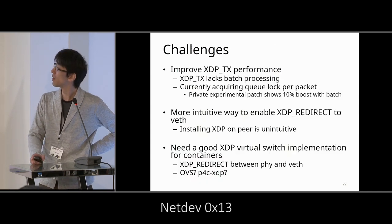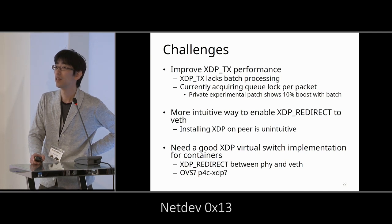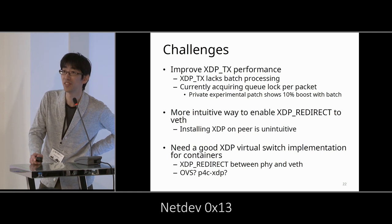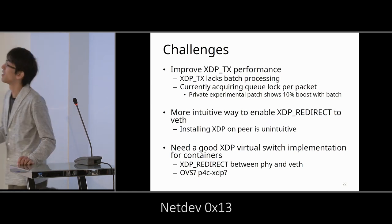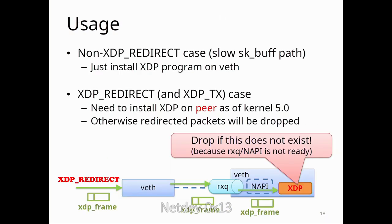Another question: regarding the queue lock per packet issue — does the driver not allocate a second set of transmit queues to allow lockless transmit? The speaker clarified that the dedicated RxQs that were added do have locks, so there is locking overhead, which is the issue being addressed.